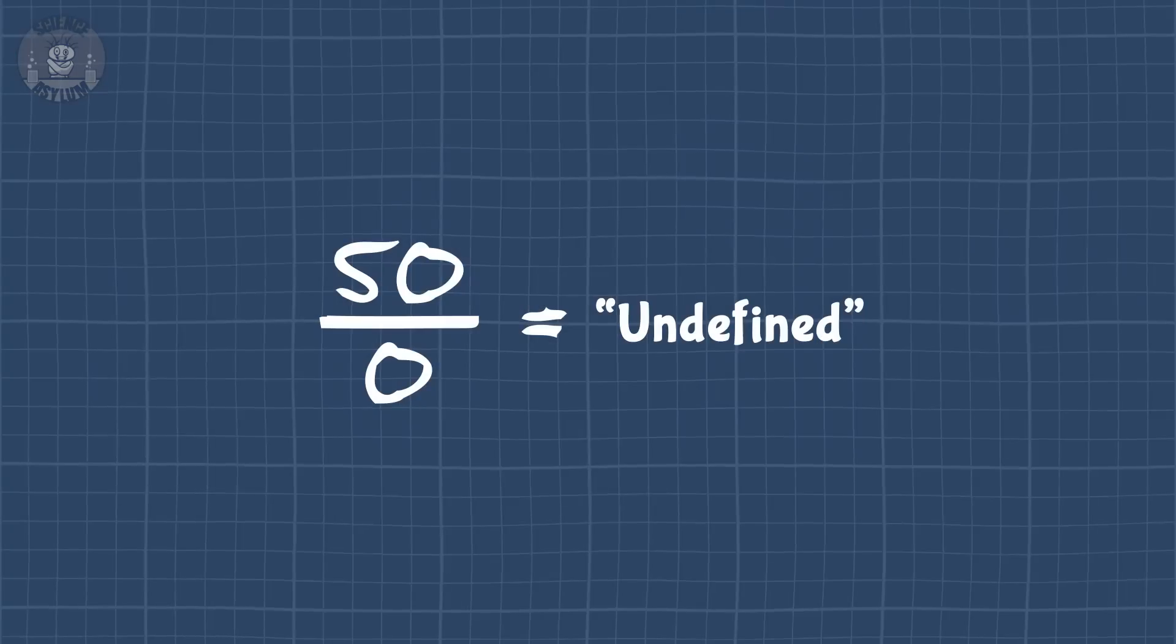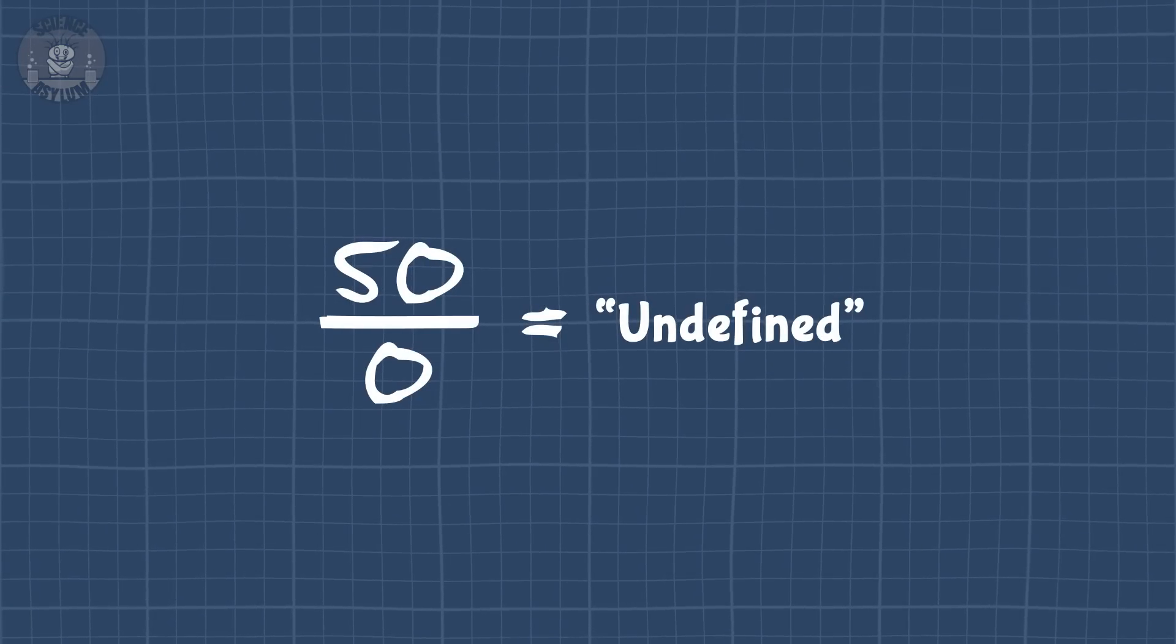Ideally, it would have exactly zero size, but that poses a few problems. The main problem being that we can't divide by zero. It just doesn't work. Luckily, we've got a trick that gets us around this problem.